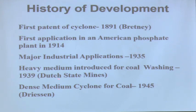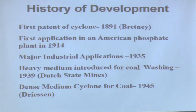The heavy medium cyclone for coal washing was introduced in 1939 — the dense medium cyclone for coal — and that started at large scale in 1945. We are still using it today.